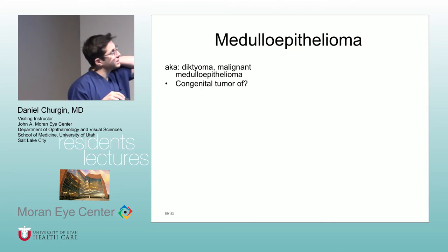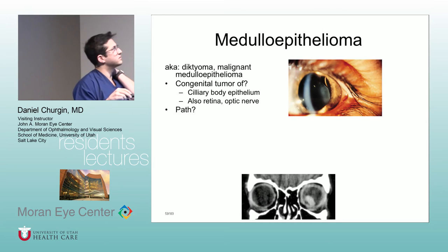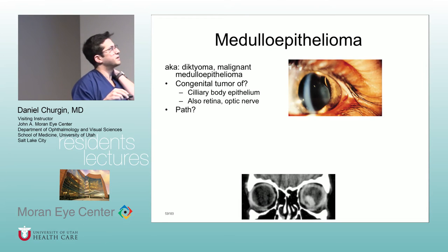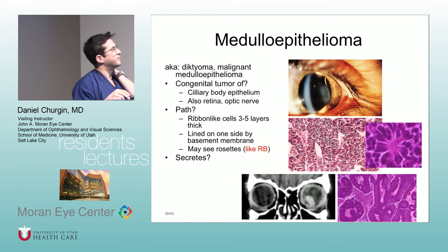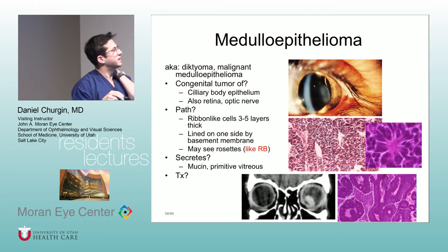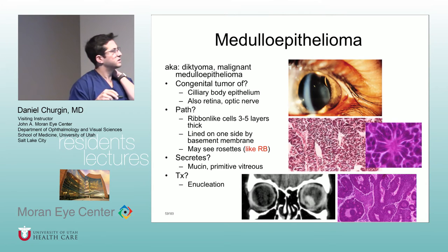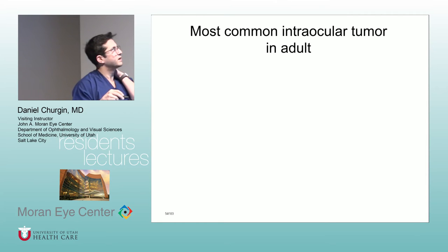Medulloepithelioma is one of my favorite tumors because it can form cartilage. It's also called dictyoma — remember that weird name. It's from ciliary body epithelium, but can also form on the retina and optic nerve. You get ribbon-like cells. You can also see rosettes, similar in appearance to those in retinoblastoma. They secrete mucin and primary vitreous, and can form multiple different kinds of tissue. Treatment is enucleation — you don't want to go into these eyes because you can cause further spread of the tumor. They may also need radiation and chemo.